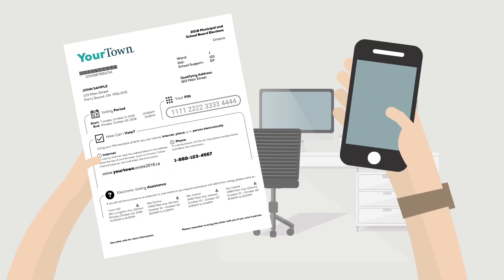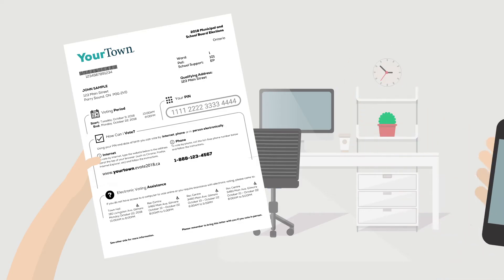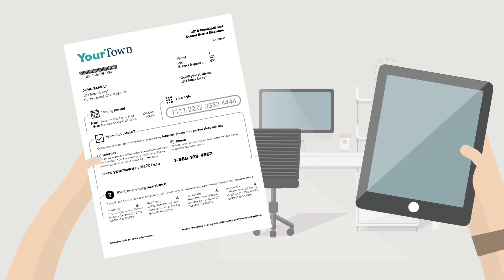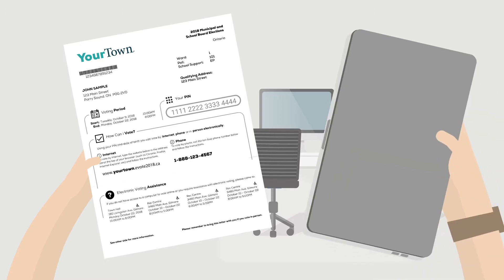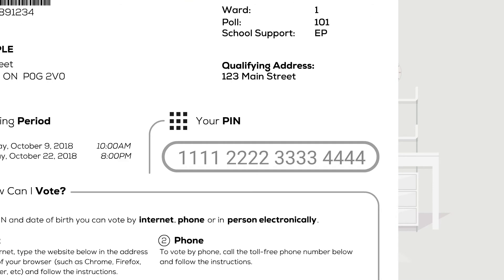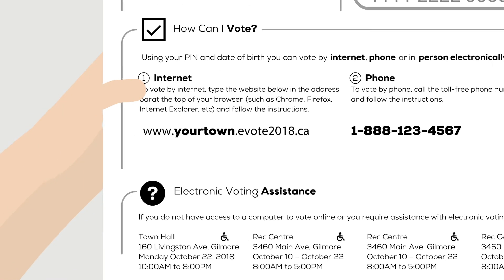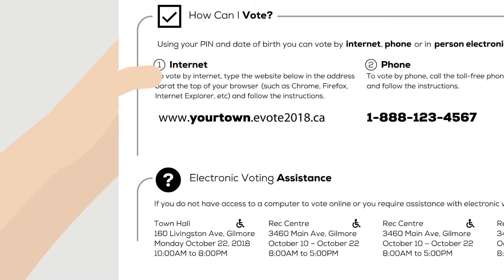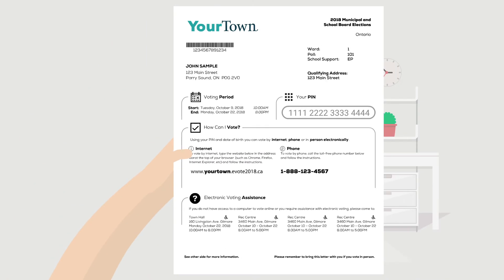For online voting, you will need your voter instruction letter and a supported device with an internet connection. In your voter instruction letter, you will find the information required to access the system. This includes your PIN, needed to identify yourself for voting, the web address to access the voting portal, and other important information related to the election.